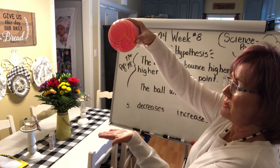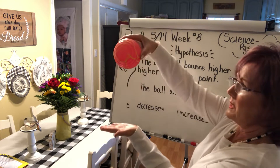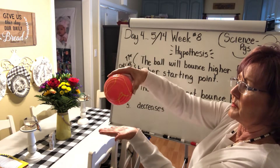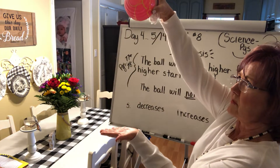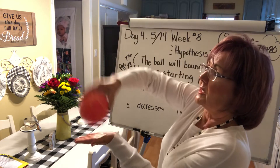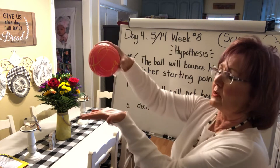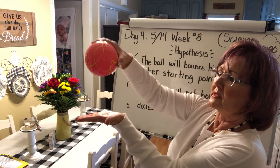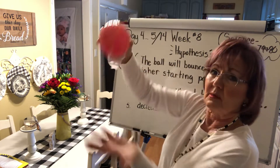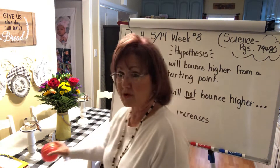Say this is my starting point and this is the floor. The first hypothesis would be: if I dropped it from here it would bounce here, if I dropped it from higher it would bounce higher. Or: the ball will not bounce higher — it doesn't matter if it's dropped from here or here, the ball will bounce the same height.